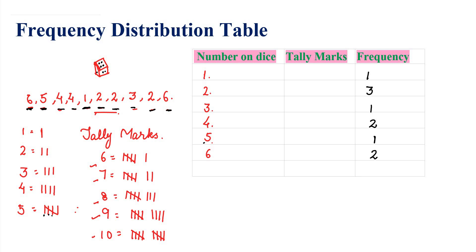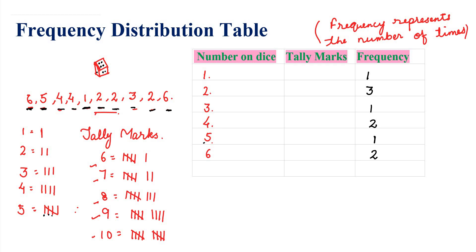Frequency represents the number of times a value appears. So: 1 appeared 1 time, 2 appeared 3 times, 3 appeared 1 time, 4 appeared 2 times, 5 appeared 1 time, 6 appeared 2 times. We represented these using tally marks. How many times have we rolled? 10 times. We have represented here using tally marks. Are you understood?